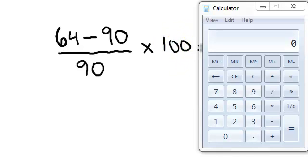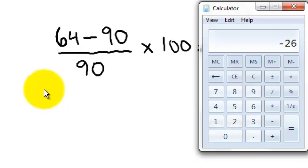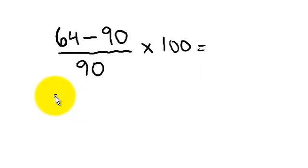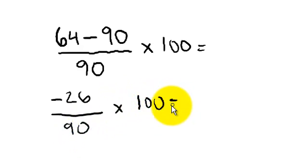And don't be afraid to pull out your calculator. So 64 minus 90 is negative 26, over 90. Going to do that times 100.